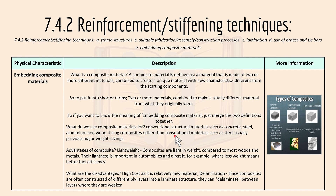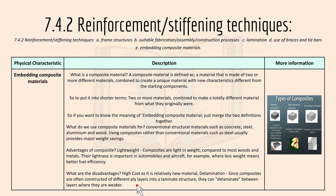The advantages of composite materials include being lightweight compared to most woods and metals, which is important in automobiles and aircraft where less weight means better fuel efficiency and performance. Disadvantages include high cost, as composites are a relatively new material. Delamination is also a concern — since composites are often constructed of different ply layers in a laminated structure, they can delaminate between layers where they are weaker. Here are the different types of composites for your reference.